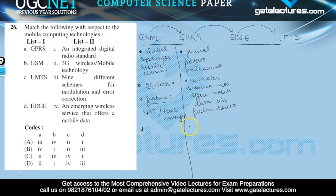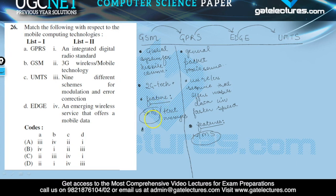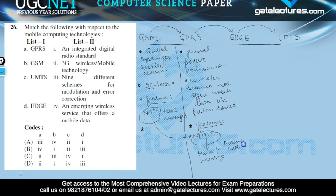GPRS provides many features, and the most popular feature is MMS. Since GPRS is the enhanced version of GSM, the feature of GSM is SMS, and MMS is the enhanced version of SMS. In SMS we can only send text messages, but in MMS we can also attach pictures, video, and sound clips along with the message.